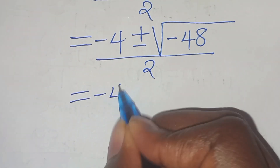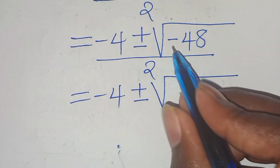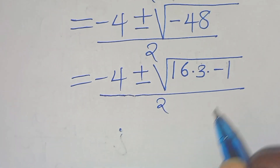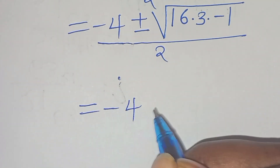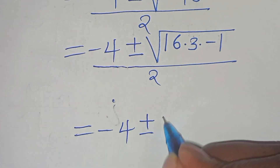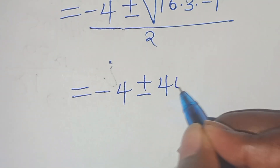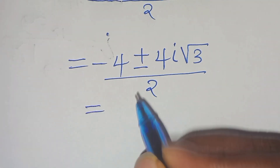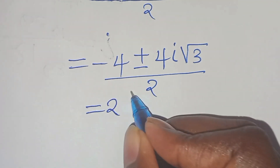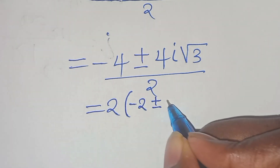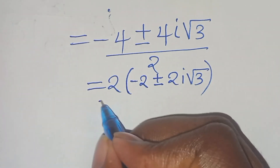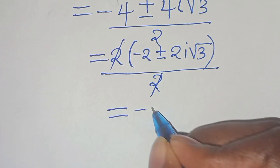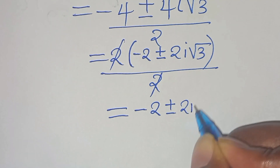We have minus 4 plus or minus the square root of minus 48, which we express as 16 times 3 times minus 1, divided by 2. This gives minus 4 plus or minus 4i root 3, divided by 2. Factoring out 2 from the numerator and simplifying, we get minus 2 plus or minus 2i root 3.